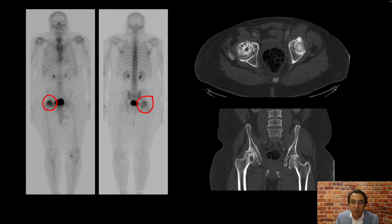On the right, we have this patient's CT scan images. On this axial image, we see that there are degenerative changes in the right hip.